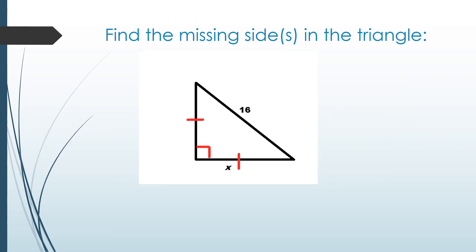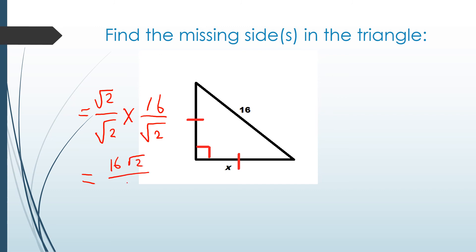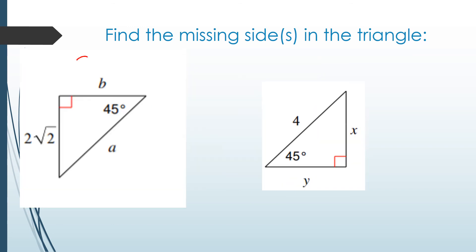For the 45-45 example with hypotenuse 16/√2: multiply top and bottom by √2 to rationalize, giving 16√2/2 = 8√2. So each leg is 8√2. Another example: if one leg is 2√2, multiply by √2 to get the hypotenuse: 2√2 × √2 = 4. Another: a leg of 4 divided by √2 gives 4/√2 for the hypotenuse, and the other leg is the same, 4/√2.